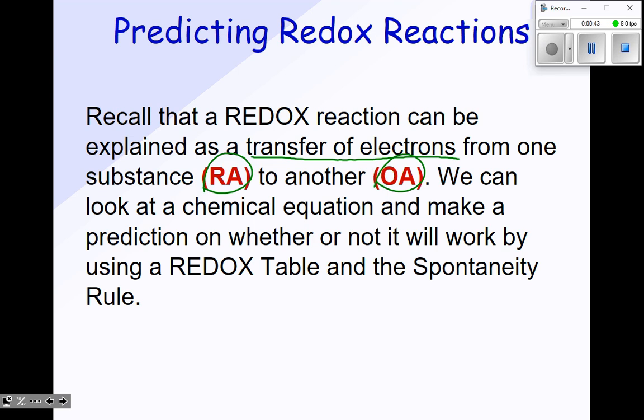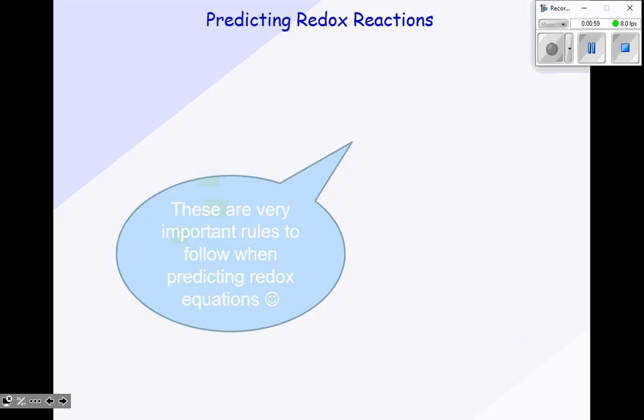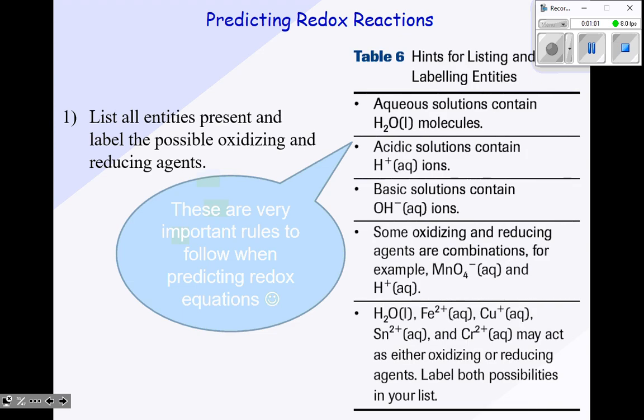Remember: spontaneous means the oxidizing agent is above the reducing agent; non-spontaneous means the reducing agent is above the oxidizing agent. Non-spontaneous just means the reaction won't happen, which sometimes we actually don't want the reaction to happen. Let's take a look at the steps and some hints, and then I'm going to walk you through two examples really slowly, giving you every step, and then a few other examples so you can have a general idea.